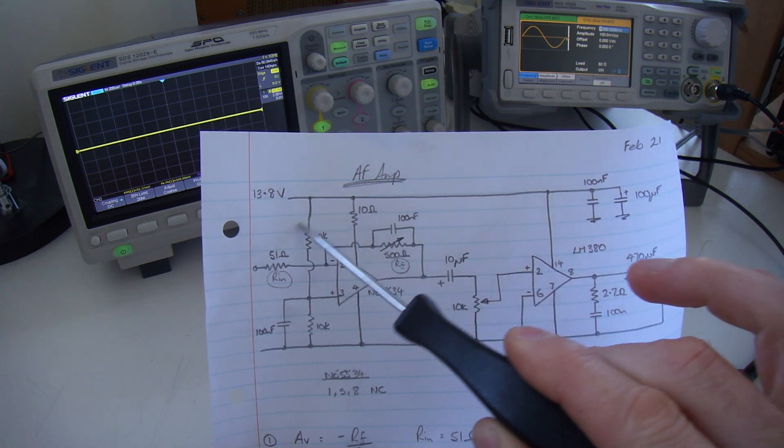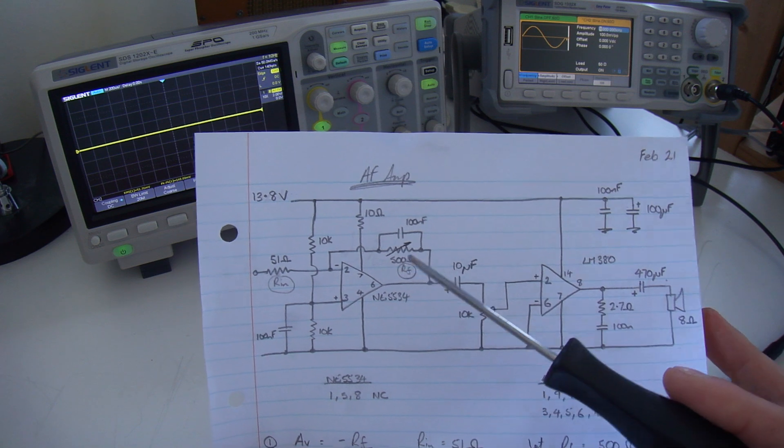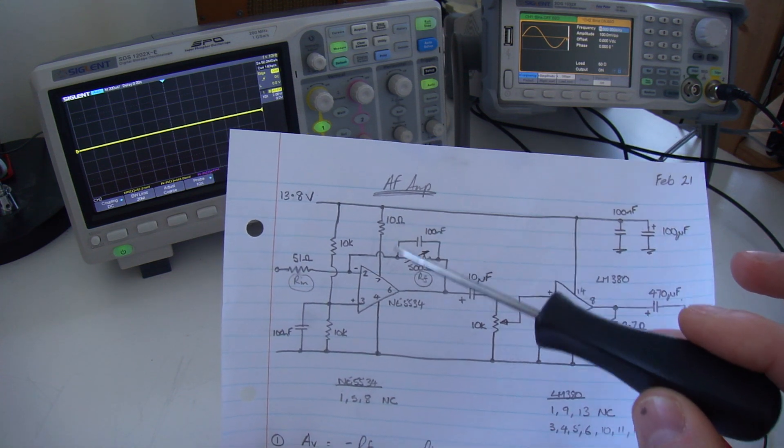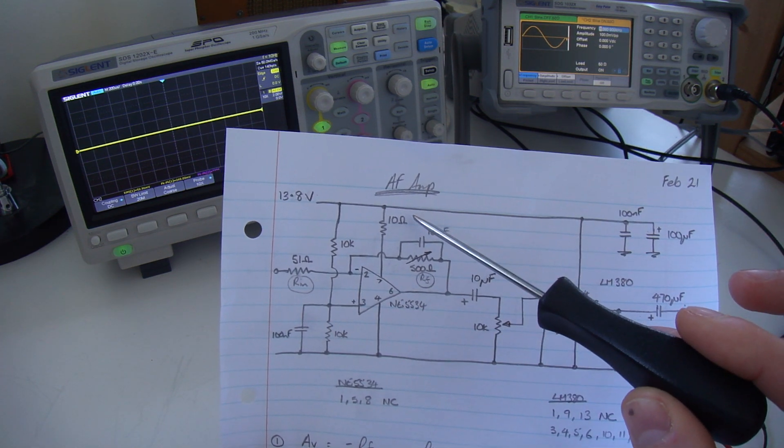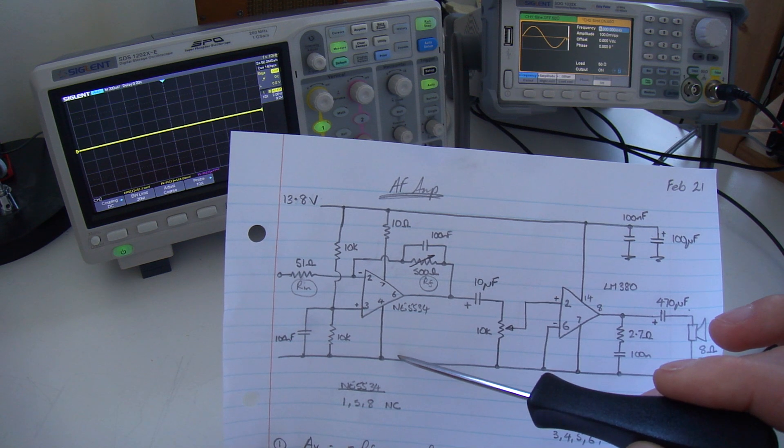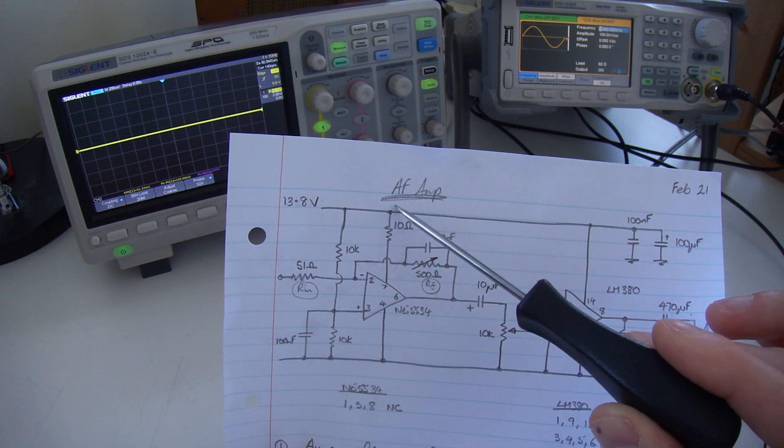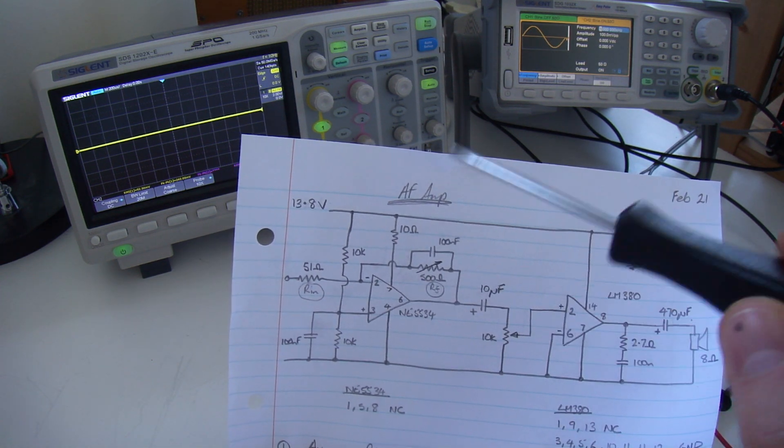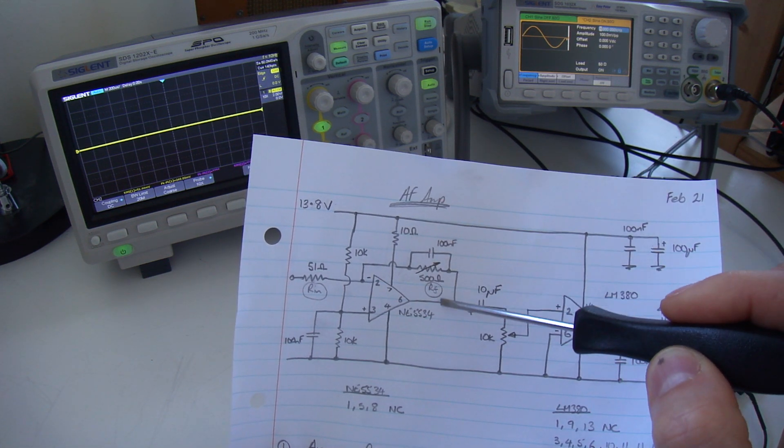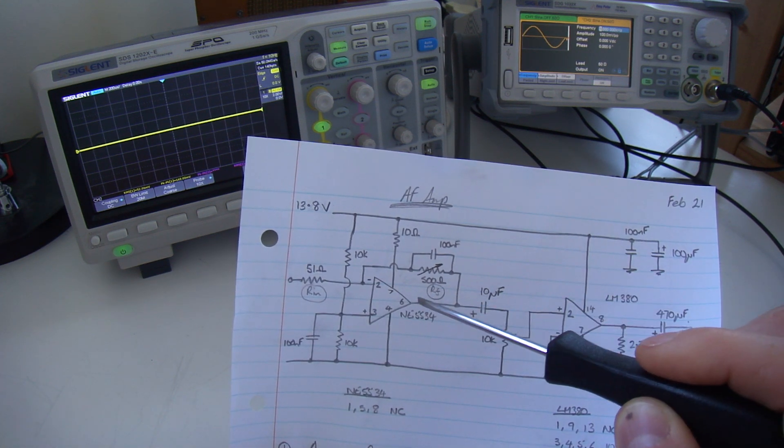I'll talk about this capacitor in a sec. The input stage here is around an NE5534, a low noise operational amplifier. This particular amplifier typically uses a split power supply, both a positive and a negative. In this case, I'm using a single ended supply. Pin 4 is tied to ground and the VCC rail going up to 13.8 volts. In order to use it in this configuration and to get the maximum output swing between 0 volts and 13.8, I want to bias this to be halfway.